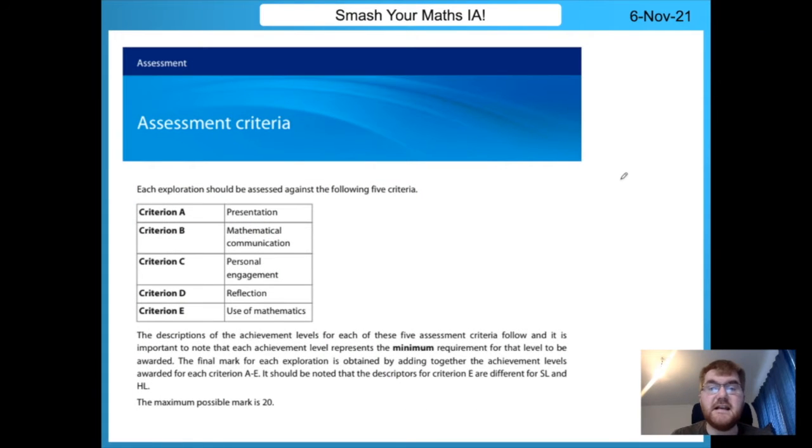So these are the up-to-date assessment criteria for your maths IA. You should be very aware of these. There are five criteria A to E: one for presentation, mathematical communication, personal engagement, reflection, and use of mathematics. The maximum possible mark for any IA, standard level or high level, is out of 20. So let's look at these one at a time and see how we can improve.